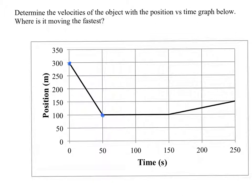This first region from 0 seconds to 50 seconds, from 50 seconds to 150, and from 150 to 250. So to find the velocity, we just want to find the slope over those periods.